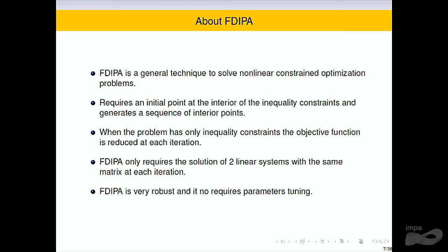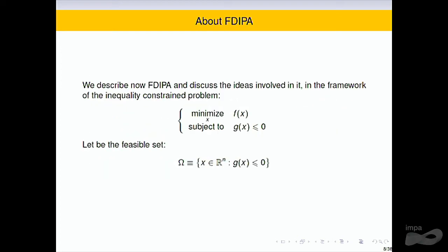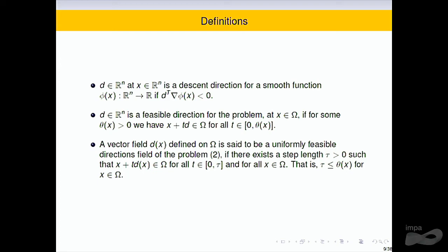We need an interior point — at the interior of the inequality constraints. When the problem has only inequality constraints, the objective function is reduced at each iteration. When we also have equality constraints, there is a function that is reduced at each iteration, like a penalty function. I shall describe the case when we have only inequality constraints. This is the problem, and I shall give some definitions.